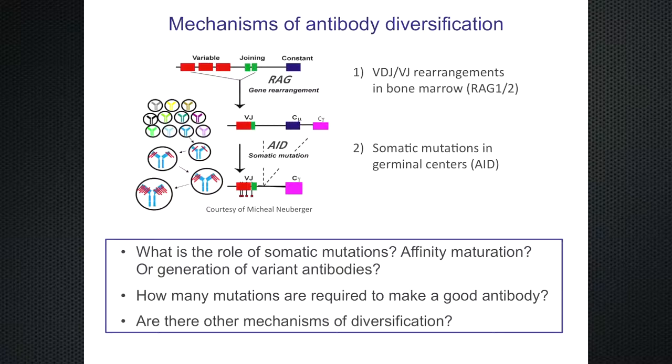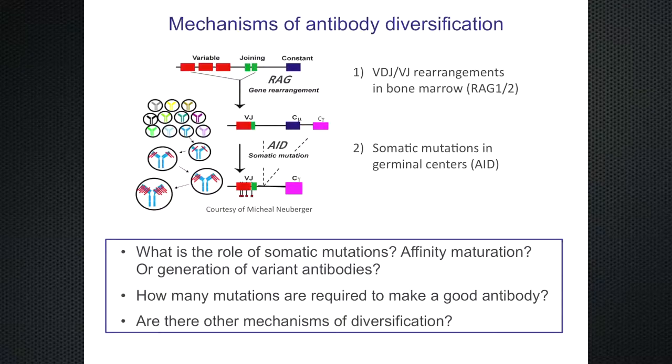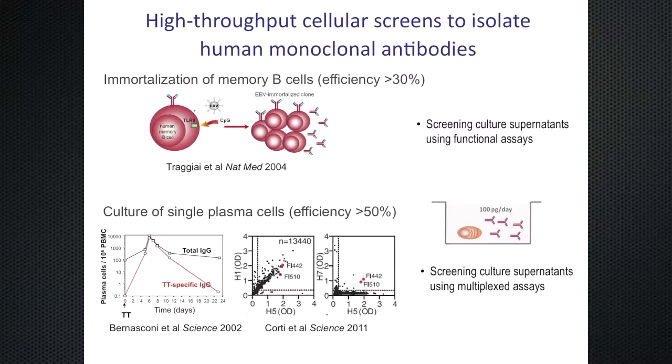What we are most interested in is to understand the role of somatic mutation. In textbooks you find that they are required for affinity maturation — essentially to make antibodies that bind better. But maybe it's also important to generate a repertoire of more diverse antibodies, as I will argue. One of the questions is how many mutations are required to make a good antibody. If you need 100 mutations, it will be very difficult. And there are other mechanisms of diversification.